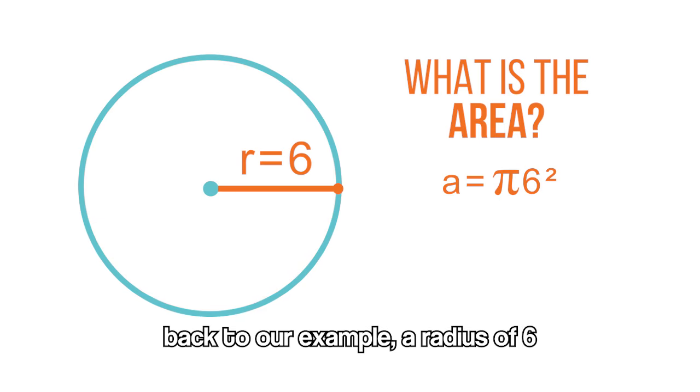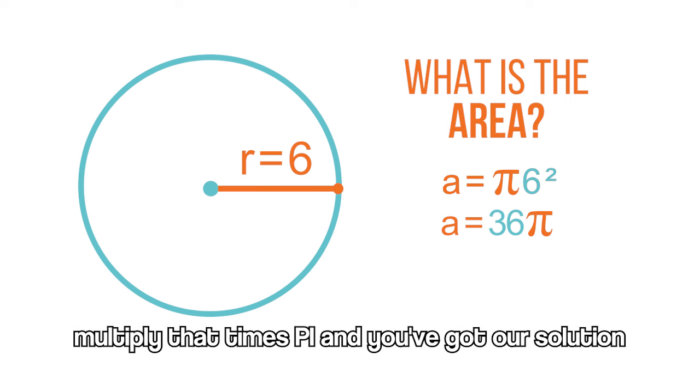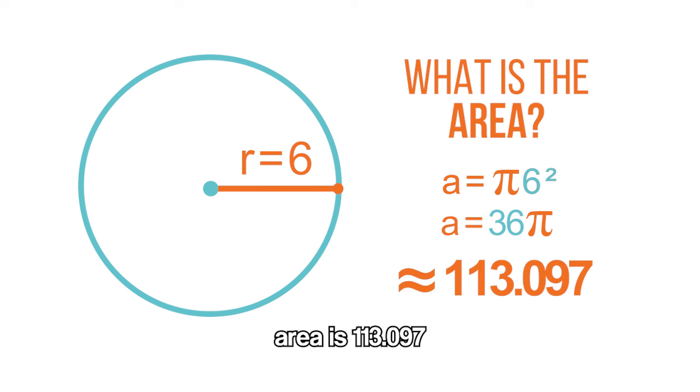Back to our example, a radius of 6. First you'd square it, 6 times 6 equals 36. Multiply that times pi and we've got a solution. Area is 113.097.